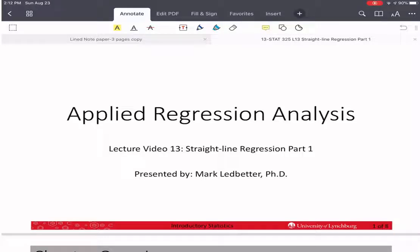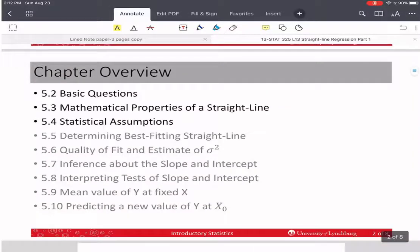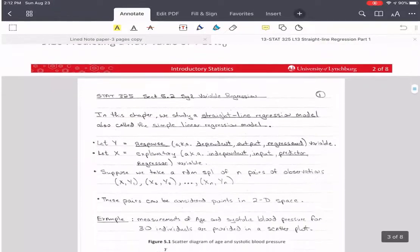Welcome back to our series on Applied Regression Analysis. I'm Mark Ledbetter, and this is Lecture Video 13. This is Straight Line Regression, Part 1, so we're in Chapter 5, Part 1 of the book. The overview of the chapter is given here. In this video, we're going to talk about the basic questions we need to ask for performing regression, some mathematical properties of a straight line, that'll be very brief, and then our statistical assumptions. That's where we're going to spend almost all of our time today.